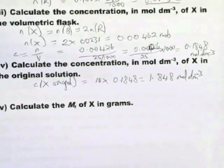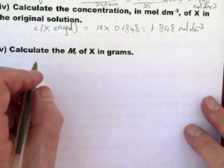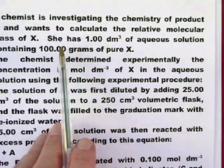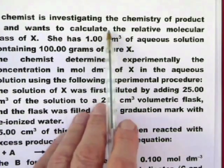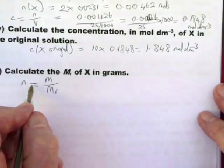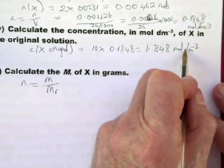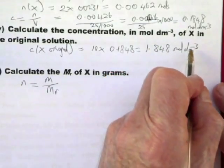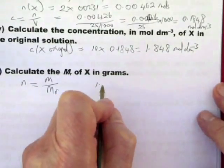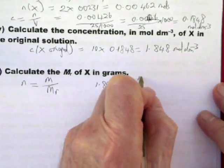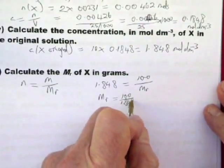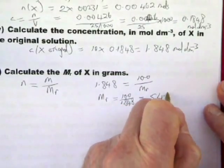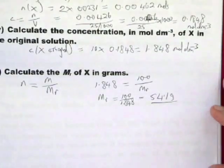Now the next thing is calculate the MR of X for grams. Now, at this point, you bring in another relationship. And the other relationship is N equals little m over MR. The value of little m for X is given in the question as 100 grams. And we also know the volume of solution, which is 1 decimetre cubed. We need to find the value of N in 1 decimetre cubed of solution. Well, it says here 1.848 moles are in 1 decimetre cubed. So N equals 1.848 equals M is 100 and then there's MR. And therefore MR equals 100 over 1.848. And that equals 54.1 grams.